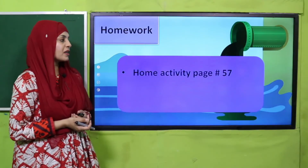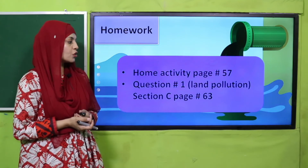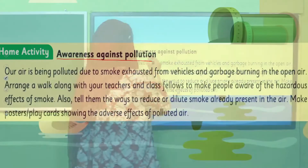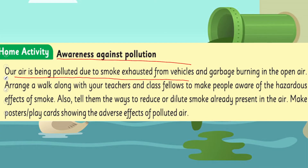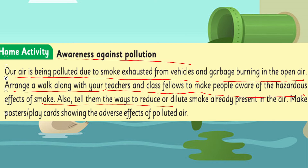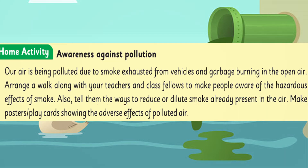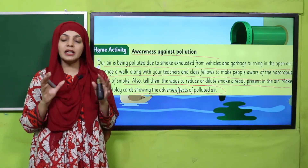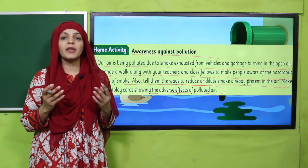Your homework: do home activity number 57, question number one on land pollution, given on page number 63. This activity is about awareness against land pollution — our air is being polluted due to smoke exhausted from vehicles and garbage burning in the open air. Arrange a walk along with your teachers and classmates to make people aware of the hazardous effects of smoke. Make posters and placards showing the adverse effects of land-polluted air.